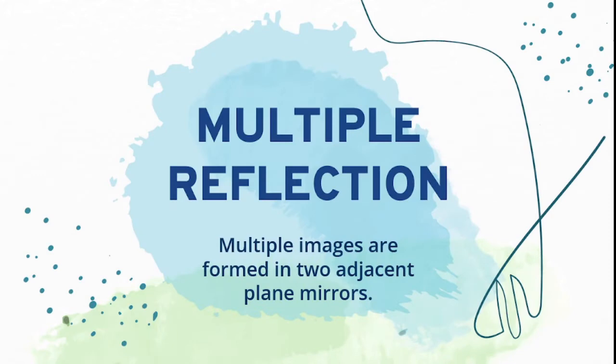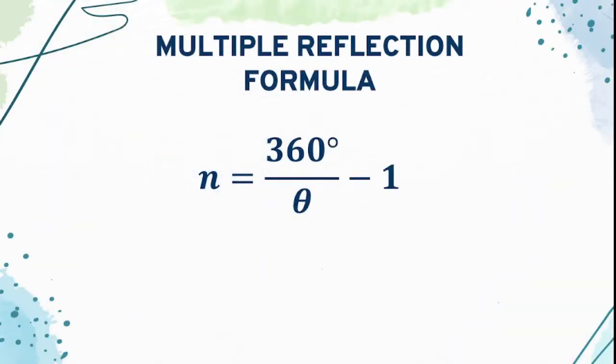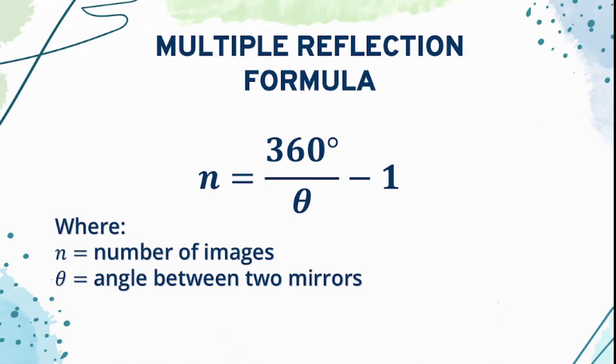Next one is the multiple reflection. Multiple images are formed in two adjacent plane mirrors. Multiple reflection is dependent on the angle between two adjacent mirrors. To determine the number of images reflected, we use the formula N equals 360 degrees divided by angle theta minus 1, where N is the number of images and angle theta is the angle between two mirrors.